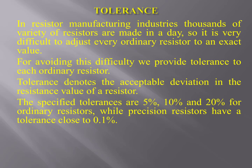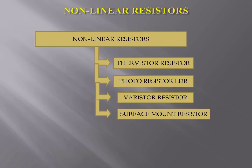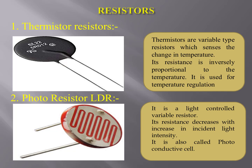Non-linear resistors are those types of resistors which do not follow Ohm's law. Types include thermistor, photo resistor (also known as LDR), varistor, and surface mount resistors. Thermistors are variable type resistors which sense the change in temperature; their resistance is inversely proportional to temperature and they are used for temperature regulation.